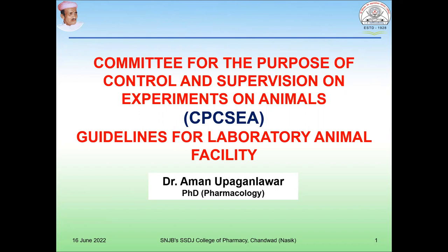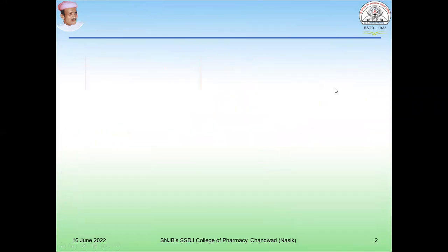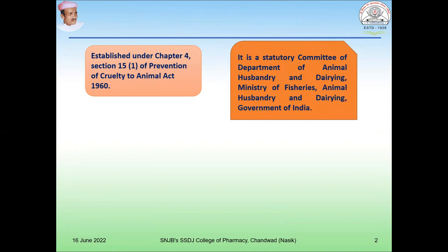This is a central committee which controls the experiments on animals. This guideline was established under Chapter 4, Section 15-1 of the Prevention of Cruelty to Animal Act 1960. CPCSEA is a statutory committee of the Department of Animal Husbandry and Dairying, Ministry of Fisheries, Animal Husbandry and Dairying, Government of India.